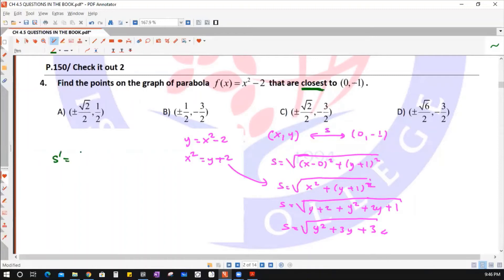Take the derivative of this function. It is (2y + 3) divided by 2 times square root of (y² + 3y + 3). So equalize this one to 0. 2y + 3 = 0, so y = -3/2.